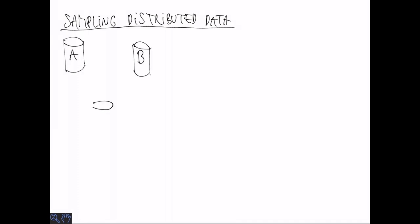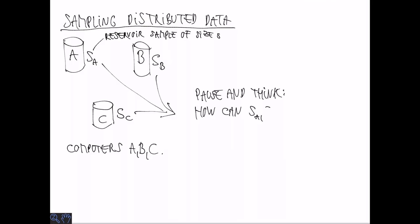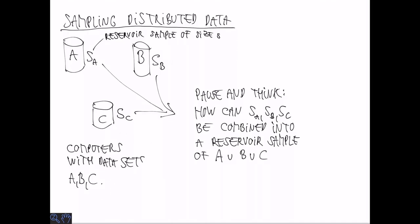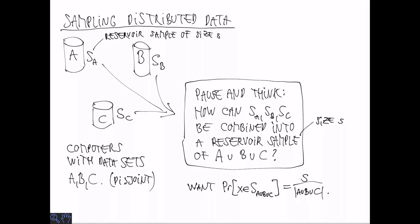In distributed settings, sampling is very useful. Think about three datasets A, B and C that reside on different computers. Suppose that each of them have taken a reservoir sample of that dataset. I claim that we can combine the three samples into a single reservoir sample of the union of the datasets, assuming that A, B and C are disjoint datasets. The reservoir sample we come up with should have size s and we want the probability of sampling a particular element should be the size of the sample divided by the size of the dataset.